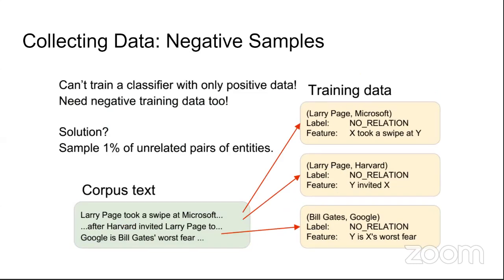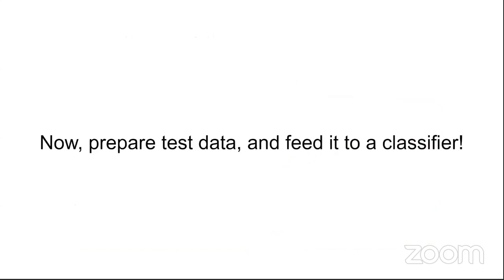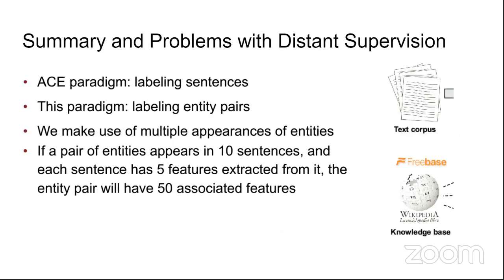Similarly Bill Gates–Harvard, label=college_attended, and Larry Page–Google, label=founder. For negative samples, you sample approximately one percent of absolutely unrelated entity pairs: Larry Page and Microsoft (no relation), Larry Page and Harvard (no relation), Bill Gates and Google (no relation). These negative samples are appended to training data; then prepare your test data, feed it to a classifier, and evaluate.